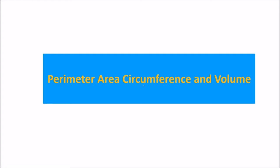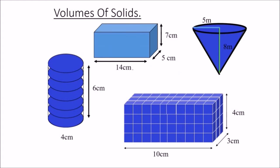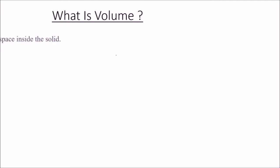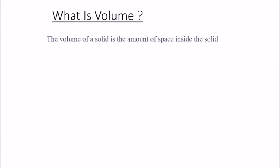We were discussing the parameter, area, circumference, and volume, and today we are going to discuss the volumes of solids. The volume of a solid is the amount of space inside the solid — any solid, the amount of space which is inside that solid is the volume.